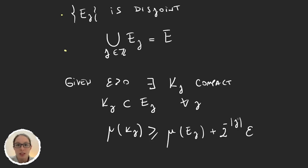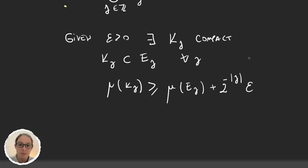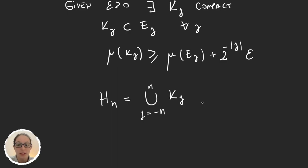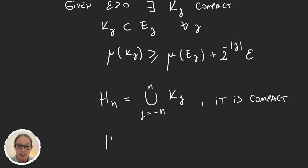We write 2^(-|J|) epsilon so that when we add everything up, the 2^(-|J|) terms sum to 1 and we eventually get mu(E) plus epsilon. We define the set H_N as the union from J equals -N to N of the sets K_J — a finite union. Since the K_J's are compact, H_N is a finite union of compact sets, so H_N is compact. Since K_J is a subset of E_J which is a subset of E, we have H_N is also a subset of E.